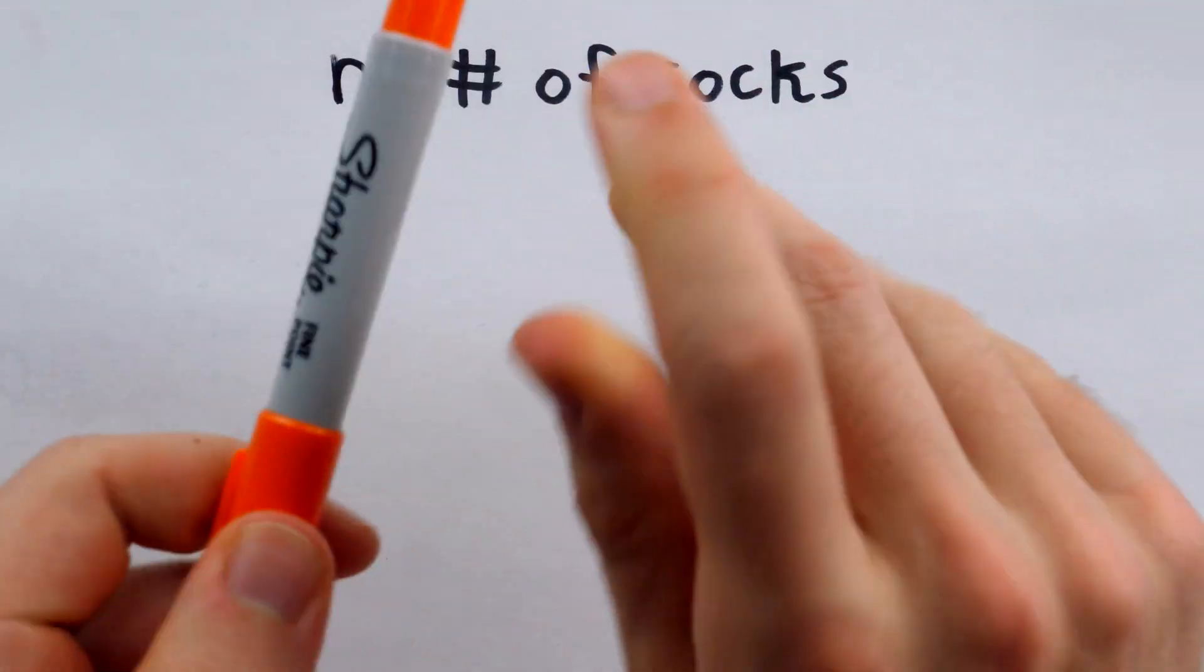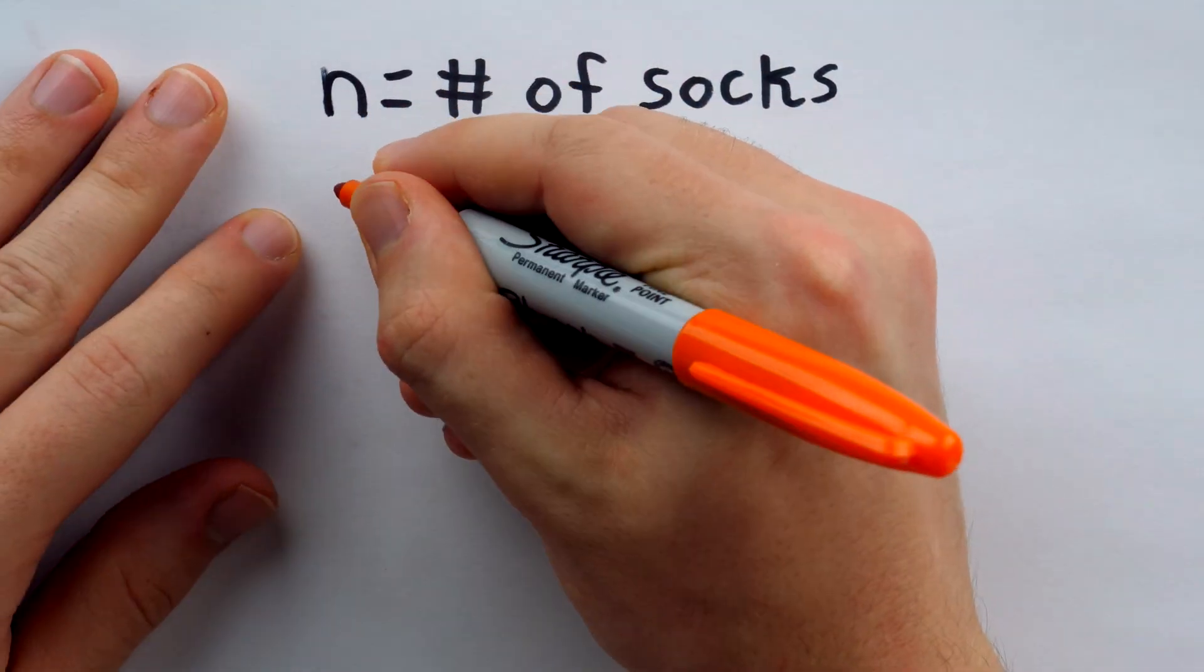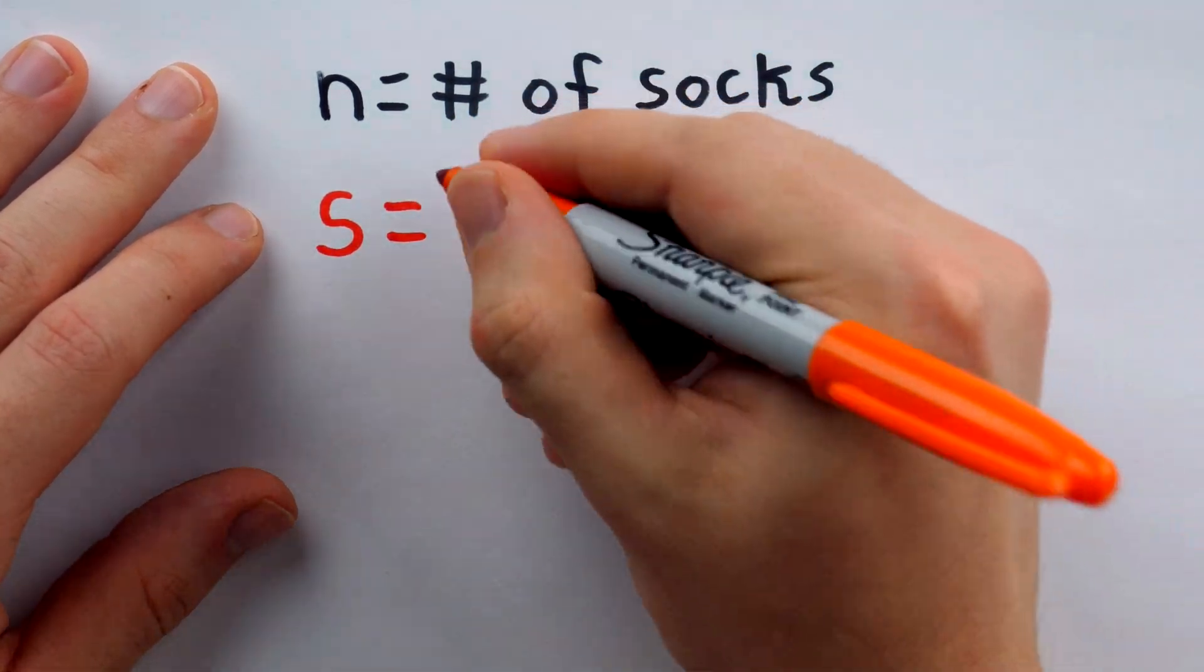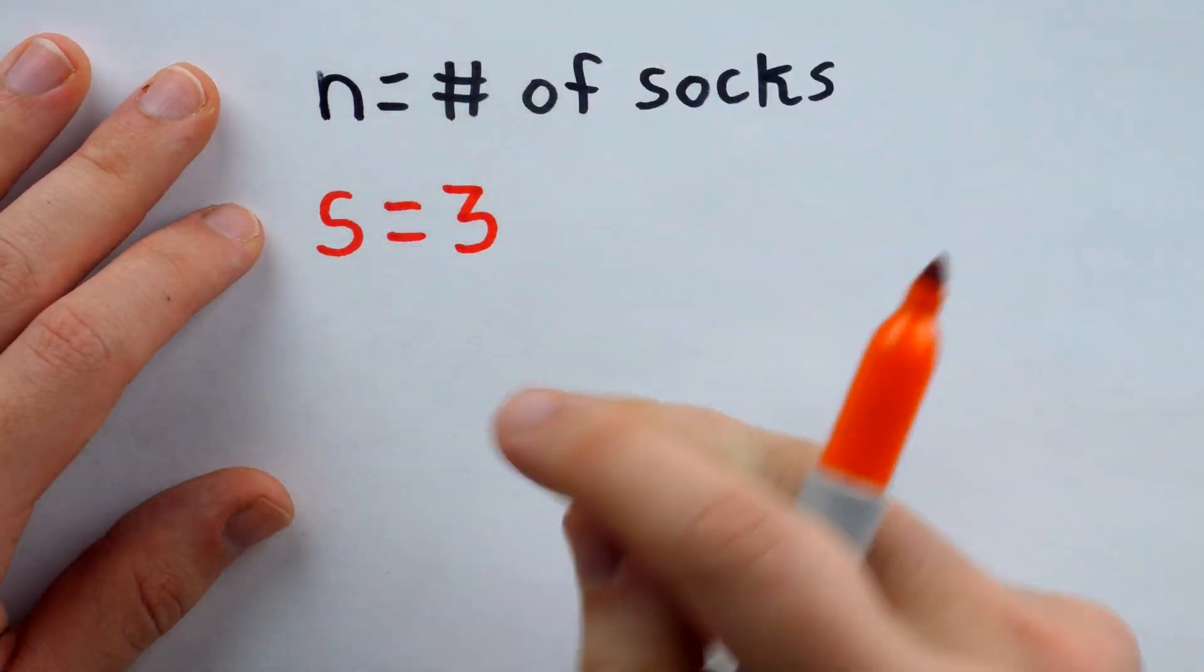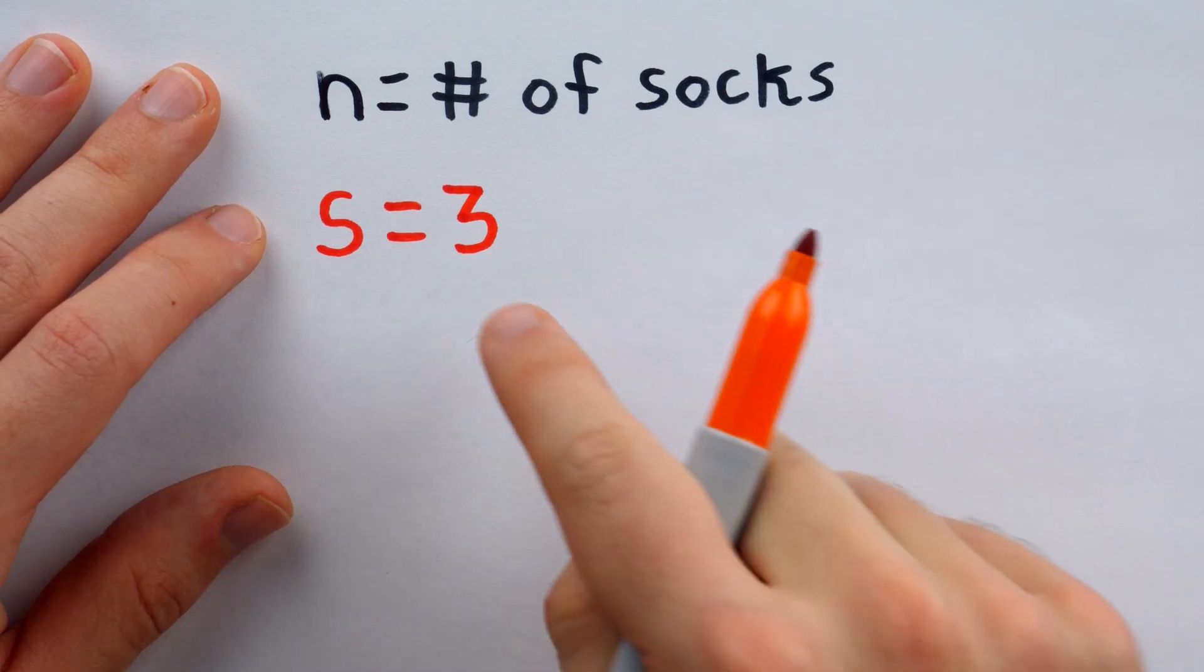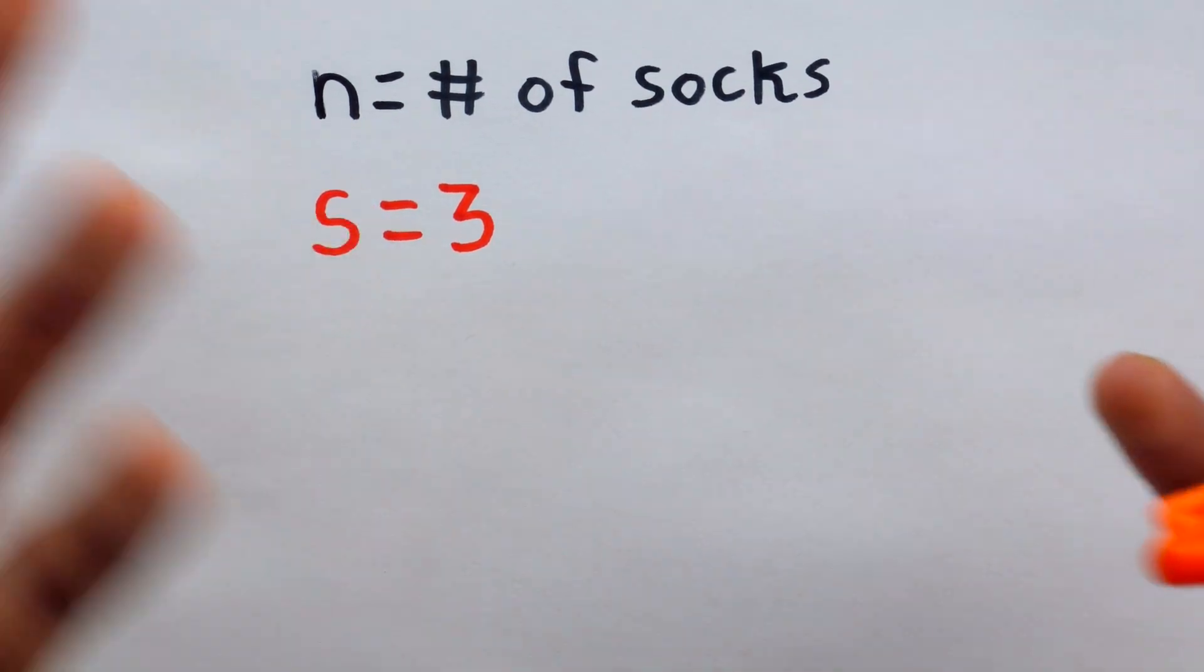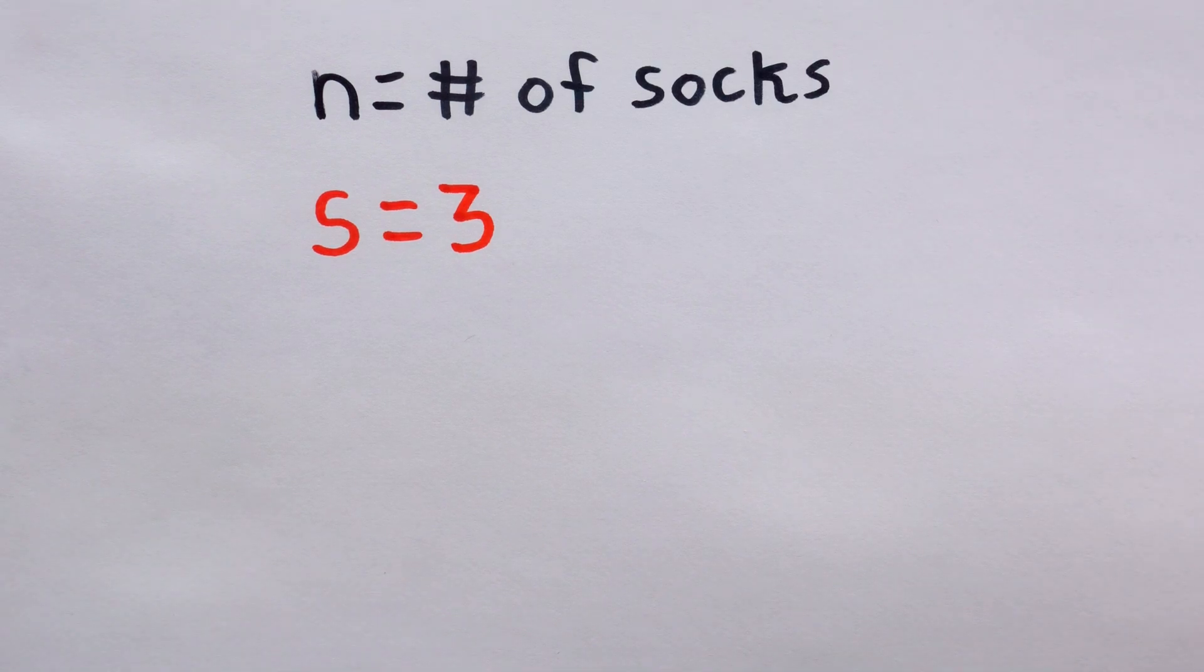Perhaps we'll call that S for same color. The minimum number of socks we must take to guarantee a pair of matching color is three. Again, that's because there are two colors, so if we take three socks, at least two of them have to share a color. It doesn't matter how many socks there are total.